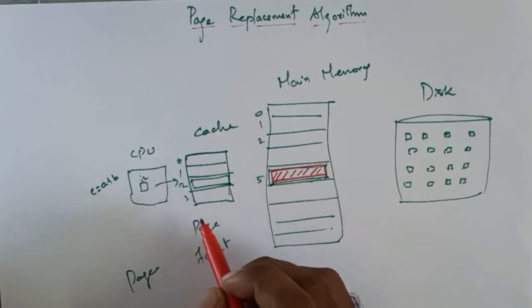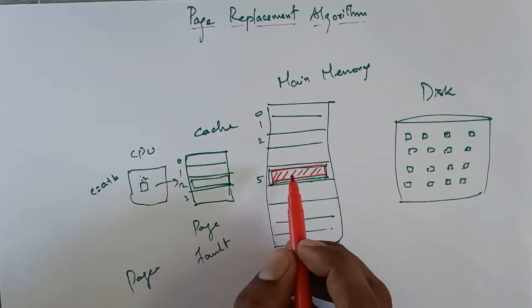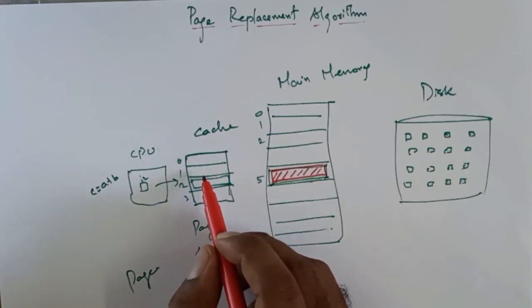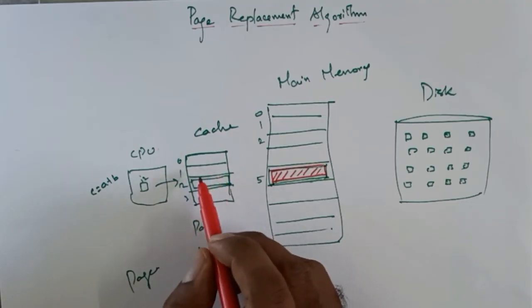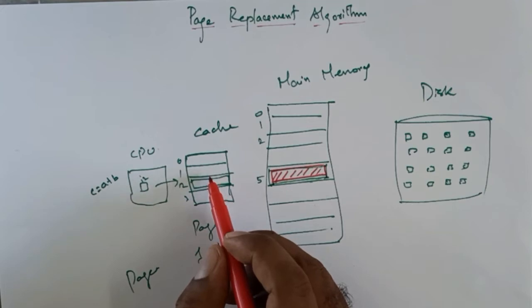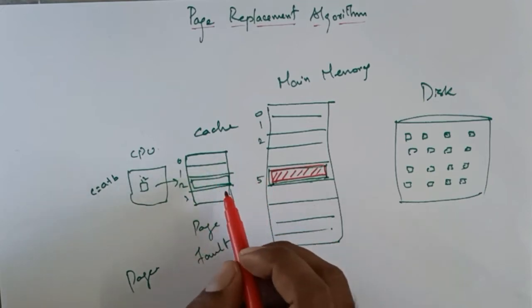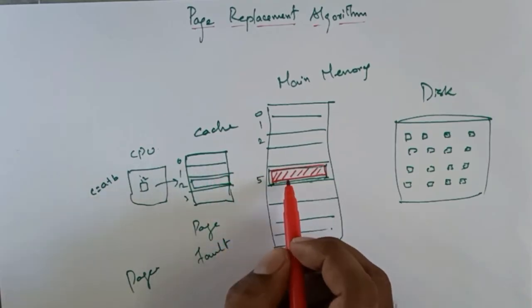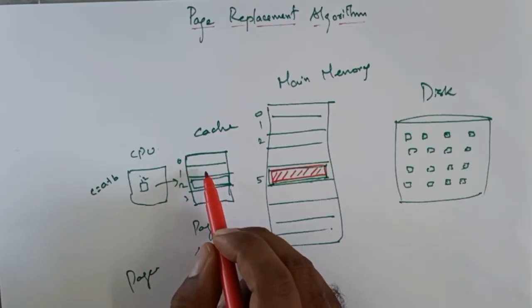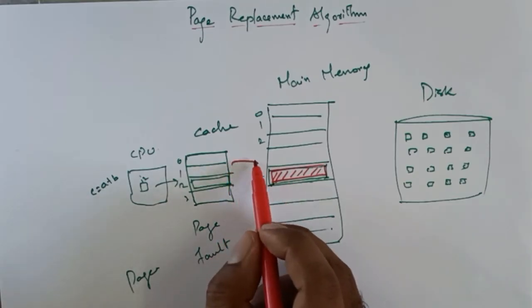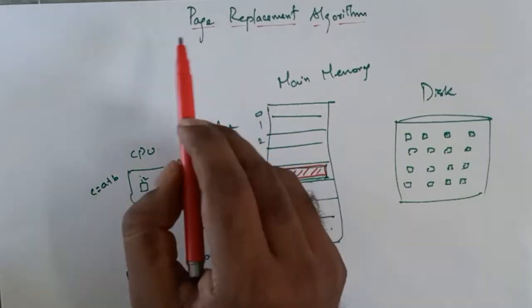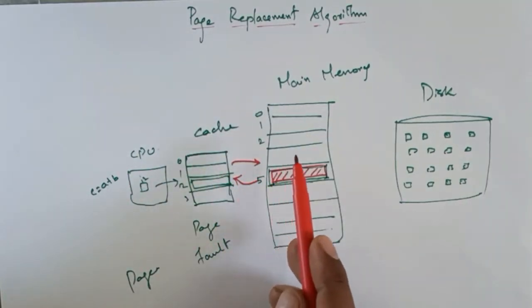If you are done in every page, you will be able to replace this page. The page is replaced, so we can use this one. This is swapping — we can replace the page, remove the page, and remove the page. So we can use this one. This is the page replacement algorithm. The page will replace using the same algorithm.